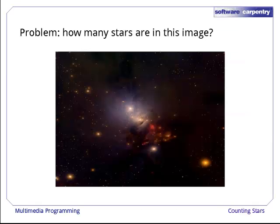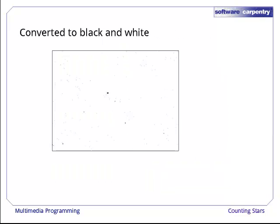As we saw in the previous episode, we can use the Python Imaging Library, or PIL, to convert a color image like this into a monochrome image like this, where black represents bright pixels and white represents background. Our question is, how many stars are there? Counting the number of black pixels would be easy, but we want to know how many joined up blobs of black pixels we have.